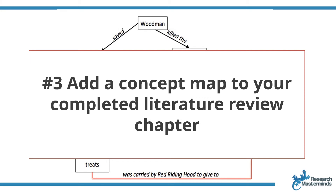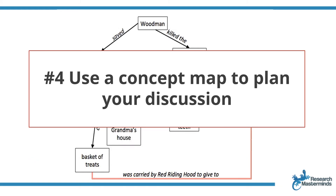You can also add a concept map to your completed literature review chapter. As you read more and more around your research topic, you'll get a better idea of the relationships between current concepts and you'll find even more concepts to add to your concept map. Adapt your concept map as you go along, and once you have a final version of your literature review, add your concept map as a figure to that chapter. This will give the reader a good overview, and it will make their hearts happy — because we all know how nice it is to be rewarded with a picture after reading pages and pages of text.